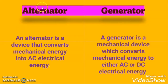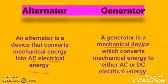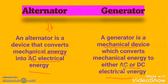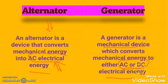The first difference between the alternator and generator is that an alternator is a device that converts mechanical energy into AC electrical energy, but a generator converts mechanical energy into both AC and DC electrical energy. Meaning an alternator can produce only AC supply, but a generator can produce AC supply as well as DC supply. Here you might have the question: why can the generator produce DC supply also, but the alternator can produce only AC supply?